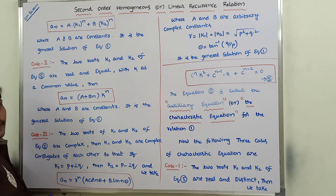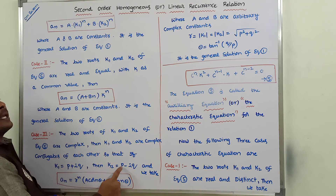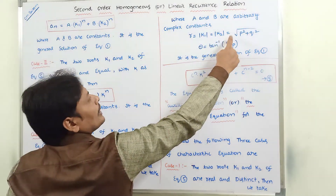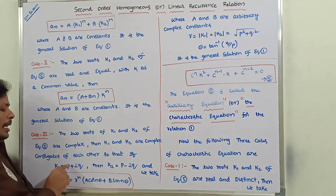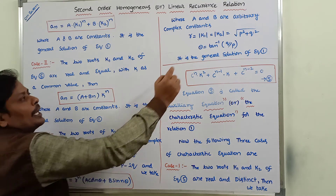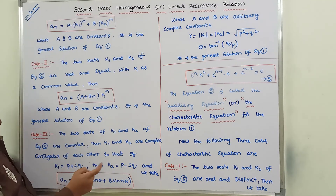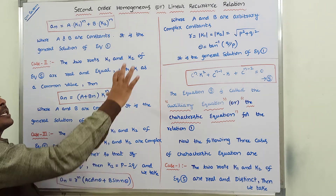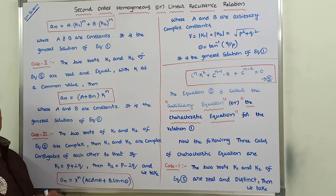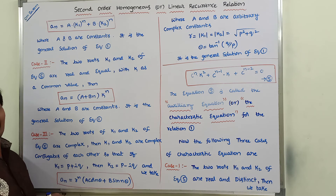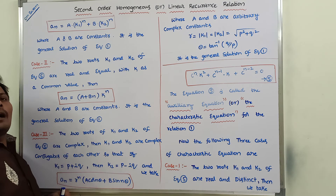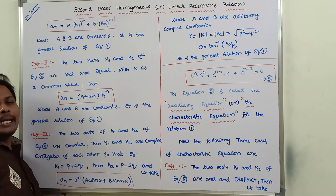Here p and q come from the complex roots k1 equals p plus iq and k2 equals p minus iq of characteristic equation 5. So r equals root of p^2 plus q^2, and θ equals tan inverse of q by p. This is the general solution when both roots are complex numbers.